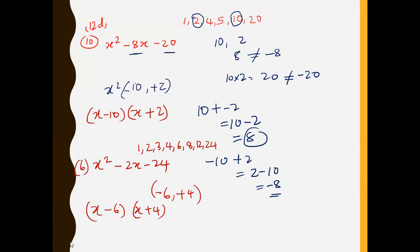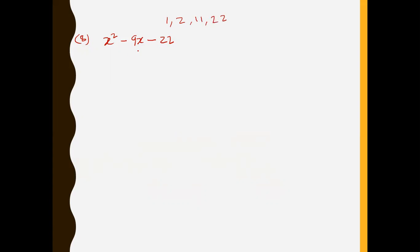Do you understand this principle? Now you're going to do this yourself. Question number 8 in the same exercise 12D says x squared minus 9x minus 22. The factors of 22 are 1, 2, 11, and 22. The two values which when subtracted give 9 are 2 and 11. So the factors are 2 and negative 11, giving x plus 2 and x minus 11.